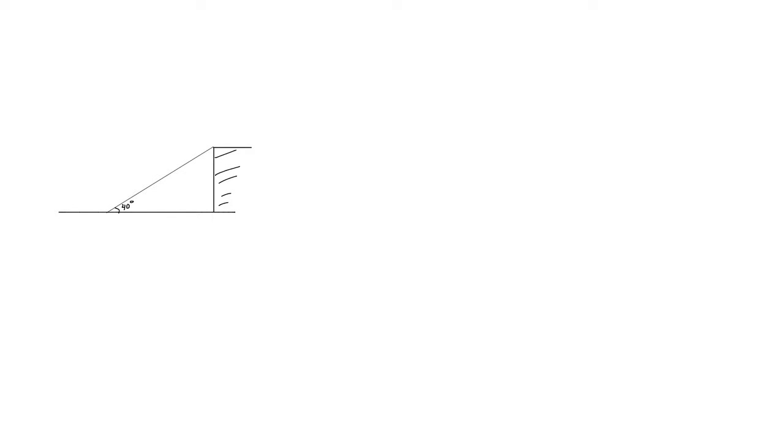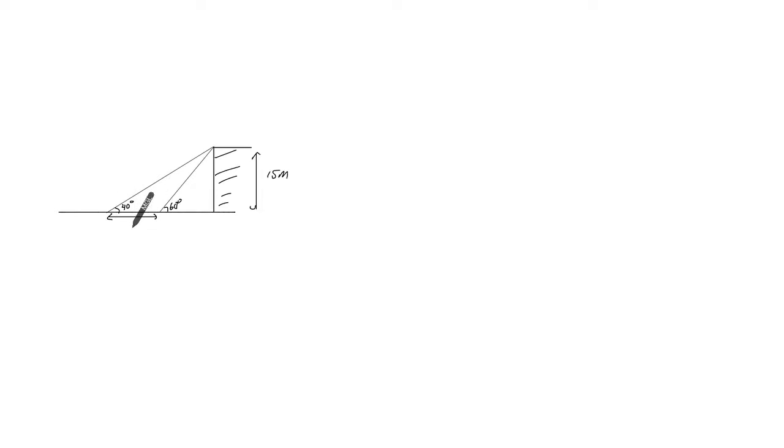We have two girls and they're looking at a house. So let's say this is the house. Girl A, when they look at the top of the house, the angle of elevation was 40 degrees. And the second girl, a little bit closer to the house, the angle of elevation was 60 degrees. The house is 15 meters tall, and what we want to find is the distance between the two girls.